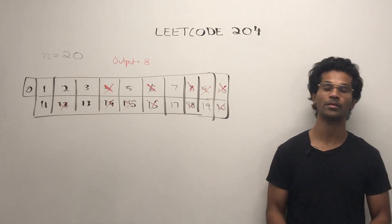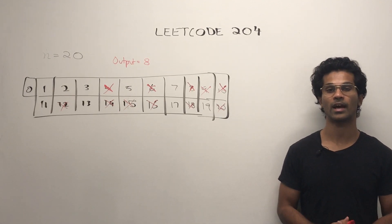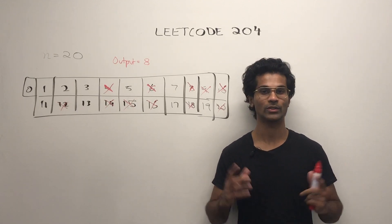So that's how you solve LeetCode 204, count primes using the sieve. The space and time complexity I'm going to link below. If you liked the video, please thumbs up and if you want to see more, don't forget to subscribe.